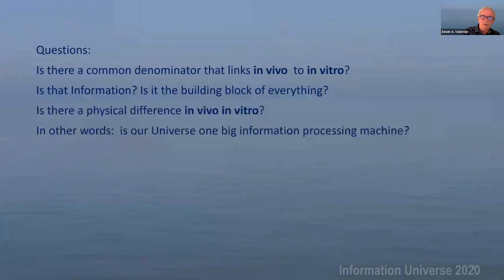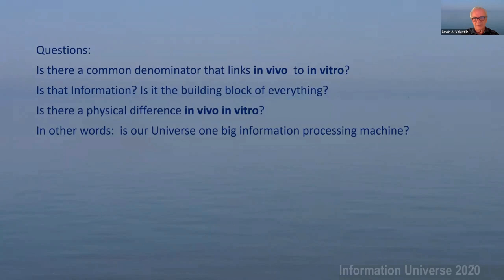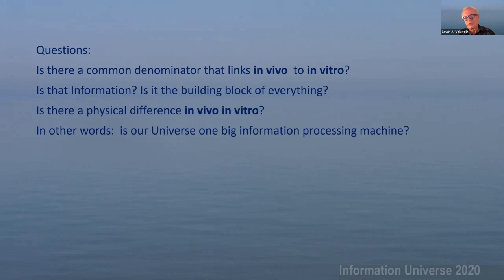The questions addressed in the book are: is there a common denominator that links in vitro to in vivo? Is that information? Is it the building block of everything? Is there a physical difference between in vivo and in vitro? In other words, is our universe one big information processing machine? There are many different approaches to this question and different speakers have different views. In this book, we follow the powers of two, and in this presentation I'll highlight a few of them.